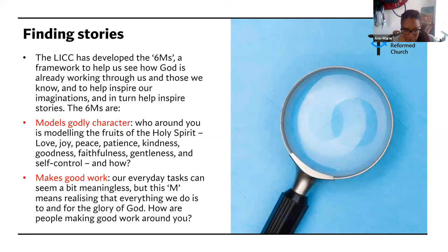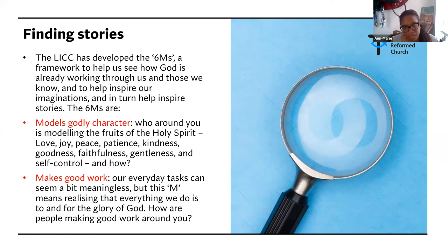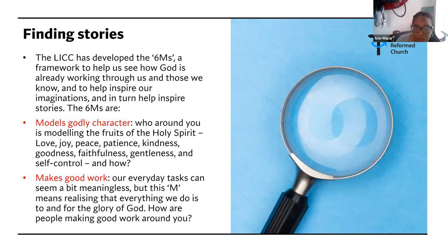So more about finding stories. The LICC — the London Institute for Contemporary Christianity — has developed the six M's, a framework to help us see how God is already working through us and those we know, and to help inspire our imaginations and in turn inspire stories. The six M's are: models of godly character. We can ask ourselves who around us is modelling the fruits of the Holy Spirit — love, joy, peace, patience, kindness, goodness, faithfulness, gentleness, self-control — and how?